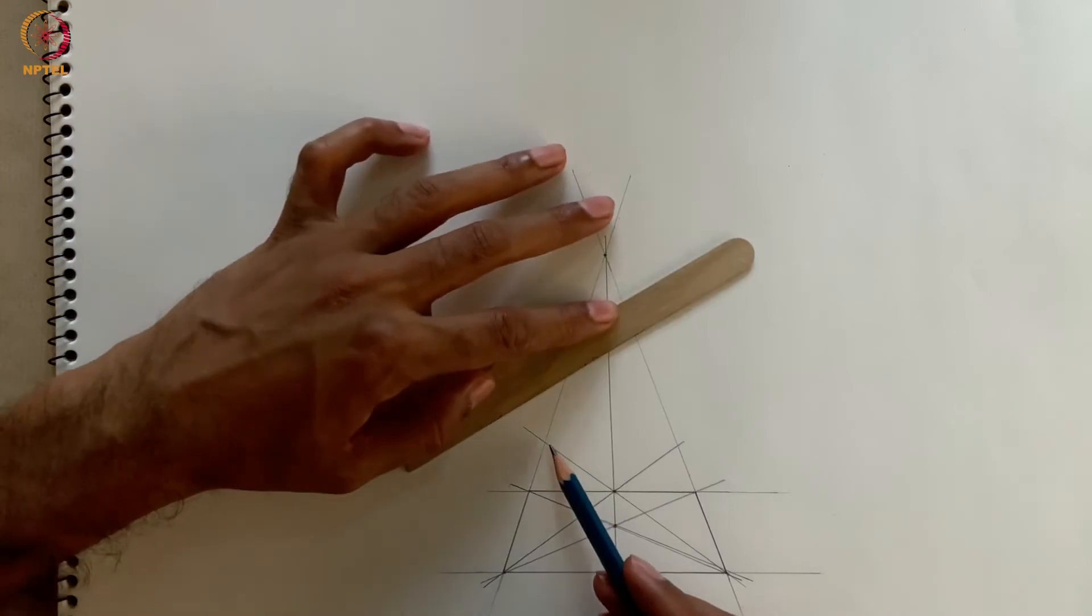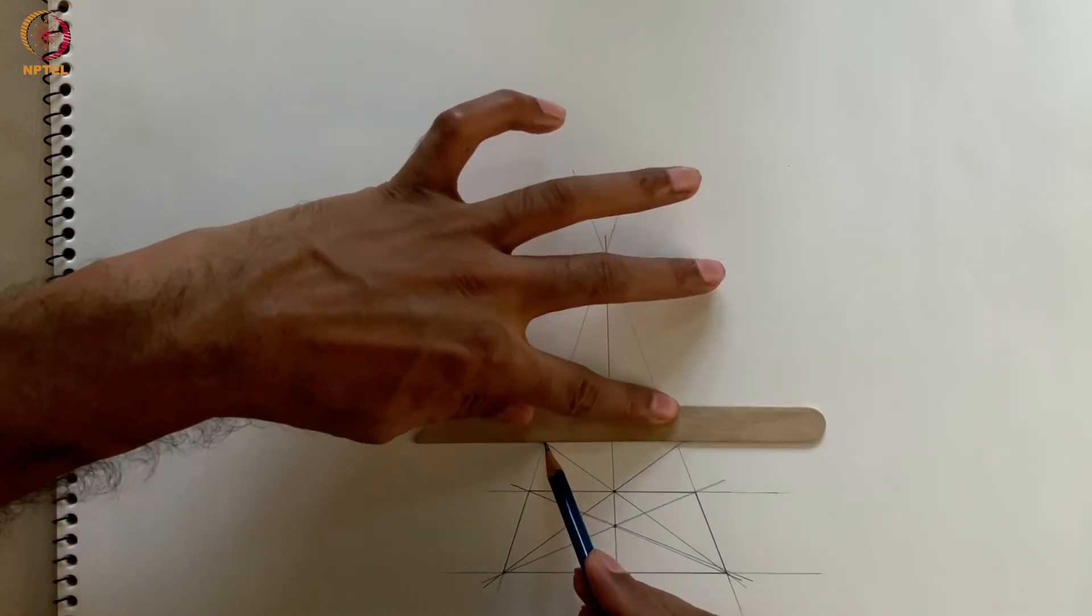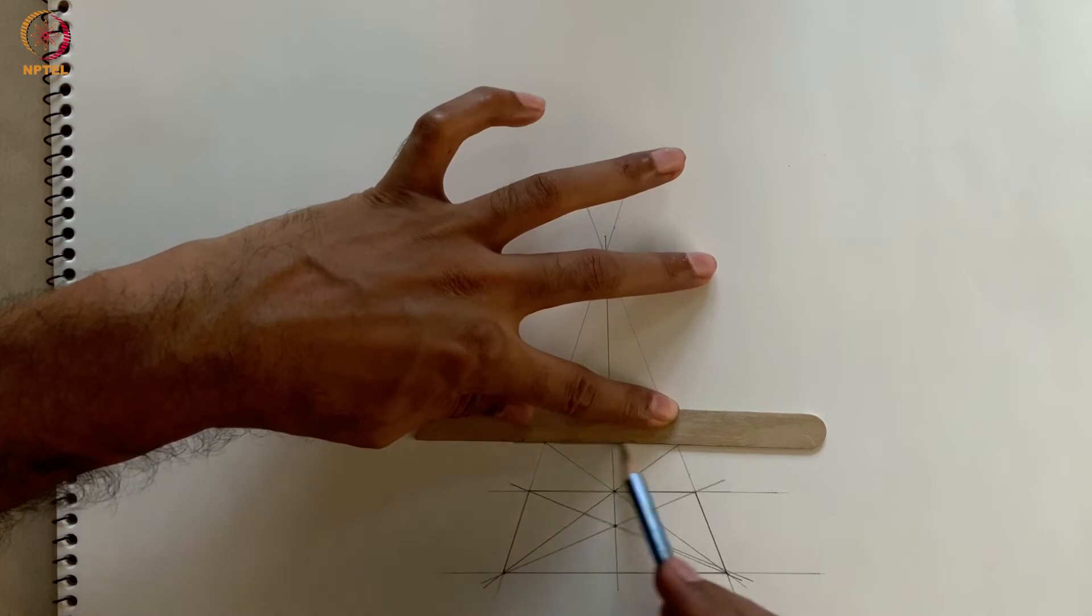We get not one, but two new corner points, and connecting them we get the next horizontal line.